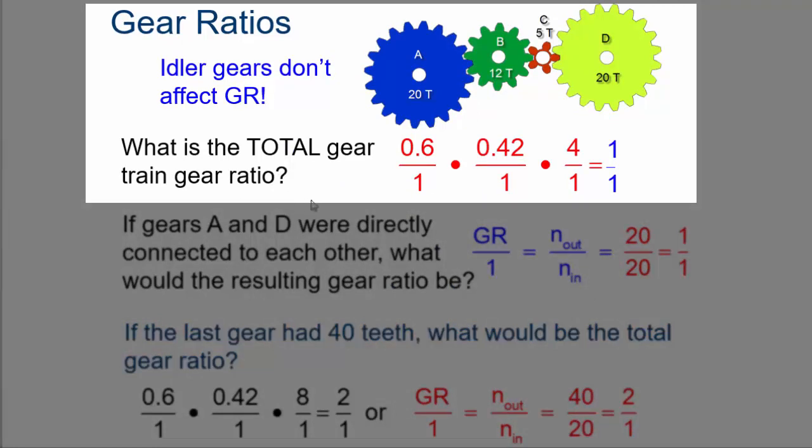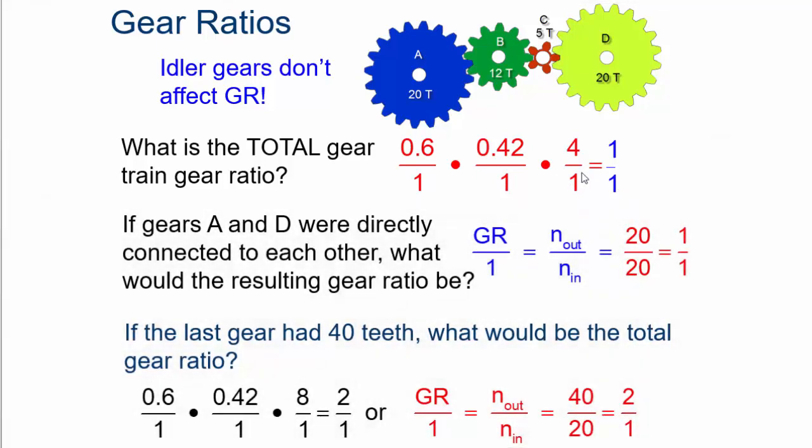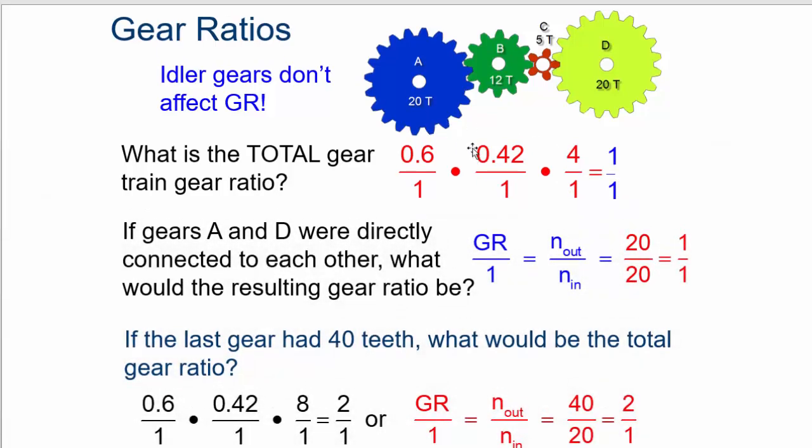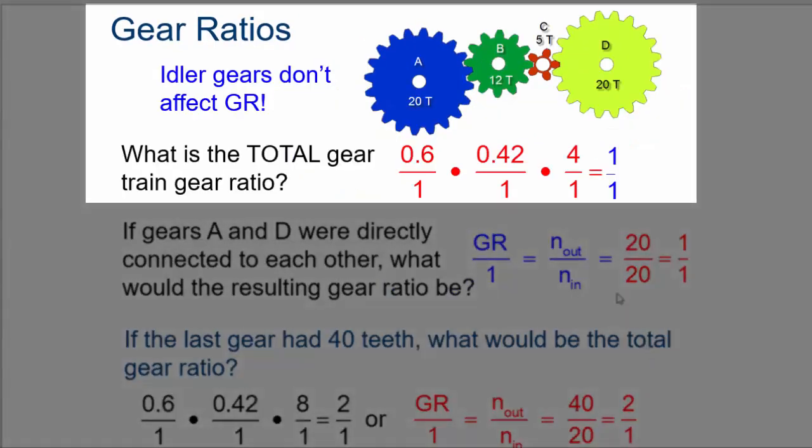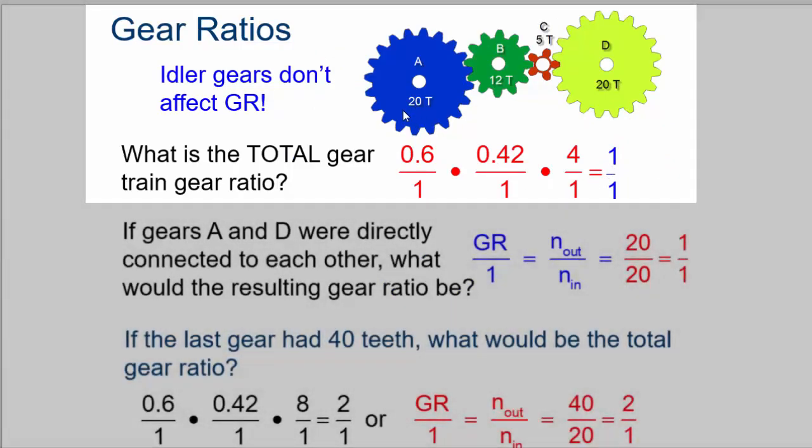So what's the total gear ratio? You take all the ratios, you multiply them together, and you get your answer. So if you take a look at this from the page before, you take all of these gear ratios, you multiply them together, and you end up with a total ratio of 1 to 1. So what's this tell us? It tells us that idler gears don't affect the gear ratio.